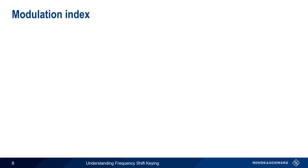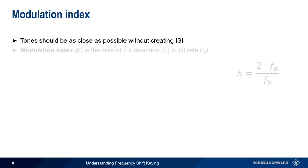But we still haven't answered the question about how far apart the tones should be. Again, to minimize the bandwidth of the FSK signal, the tones should be as close to each other as possible without creating inter-symbol interference. We can quantify this using something called the modulation index, which is the ratio of twice the deviation to the bitrate.